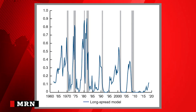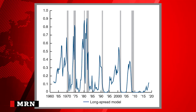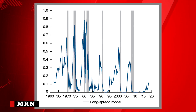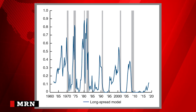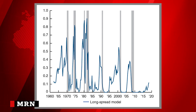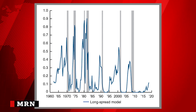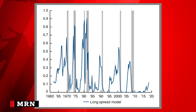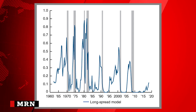This graph shows the fitted probability that a recession will occur over the next year, when the explanatory variable is the 10-to-2-year yield curve spread. The fitted probability peaks before the beginning of each recession, with the exception of an anomaly in the mid-1960s.